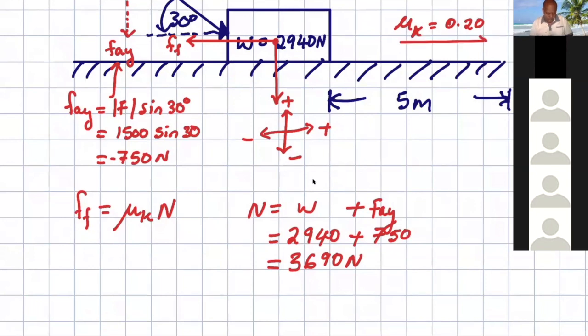The mu k is 0.20. Now we're going to say mu k, which is 0.20 multiplied by the normal force, which is 3690. So that would be 0.20 multiplied by 3690. And this is still a force. So this force is negative.